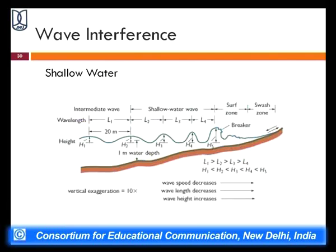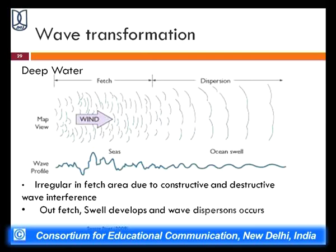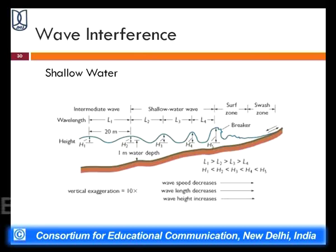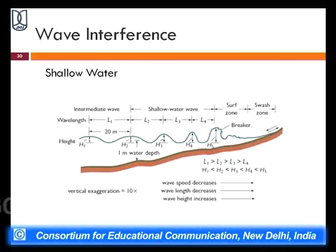As waves interact with coastal regions and move into shallower water, they pass through intermediate wave, shallow wave, and surf zones. The wave length decreases as the wave moves toward the coastal area while the wave crest height increases. This height increase results in the formation of breakers before the wave fractures against the coastal region. Wave length decreases and wave height increases as the wave approaches the shore.